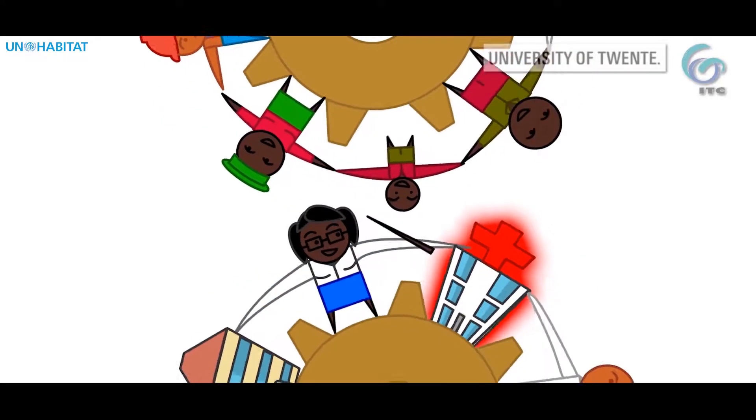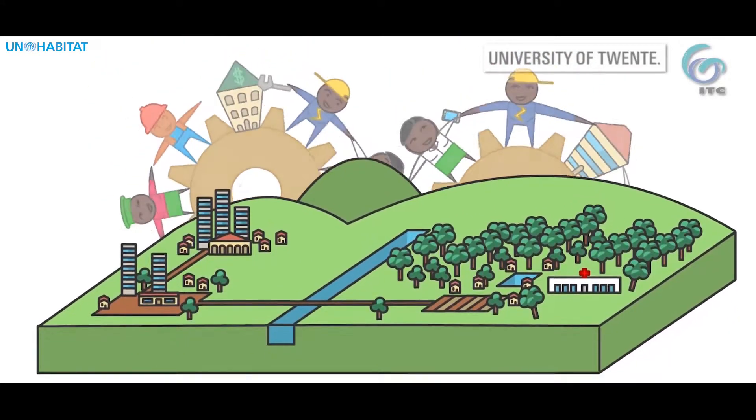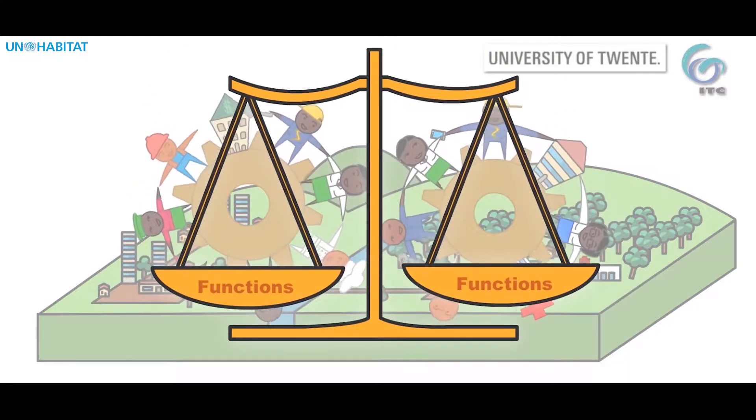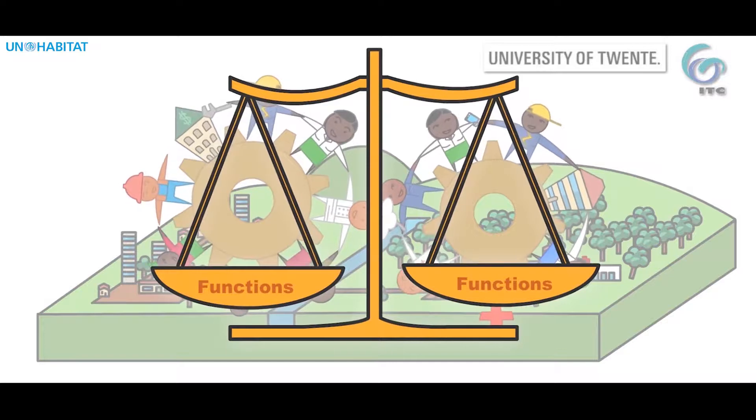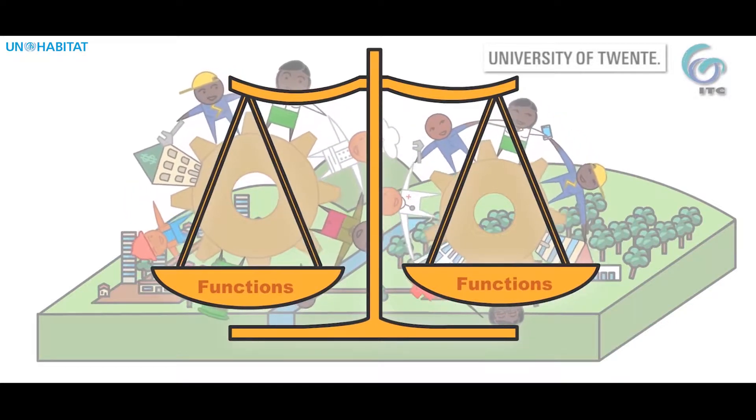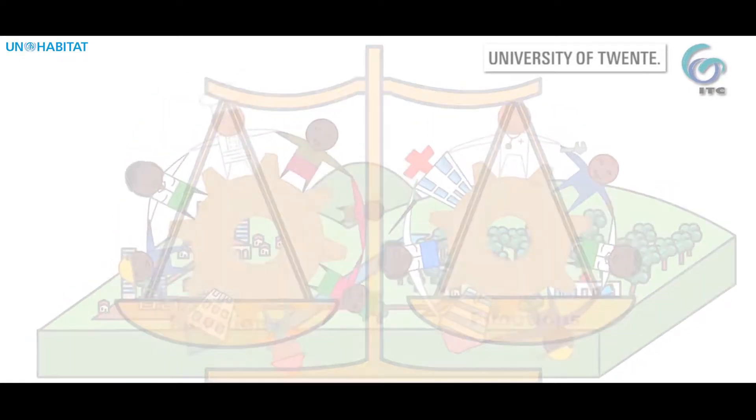So big cities and smaller towns need a balanced mix of functions that work together and support each other. The regional machine works if the bits and pieces work together.